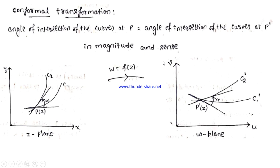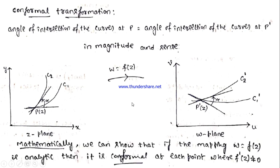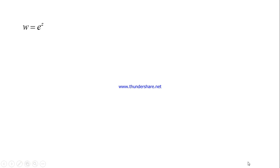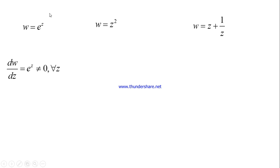Can we determine conformality mathematically? Yes. If we can show that the function w = f(z) is analytic, then it is a conformal transformation at every point where f'(z) ≠ 0. For example, w = e^z has a derivative that is never zero, and since it is analytic, it is conformal everywhere in the complex plane.